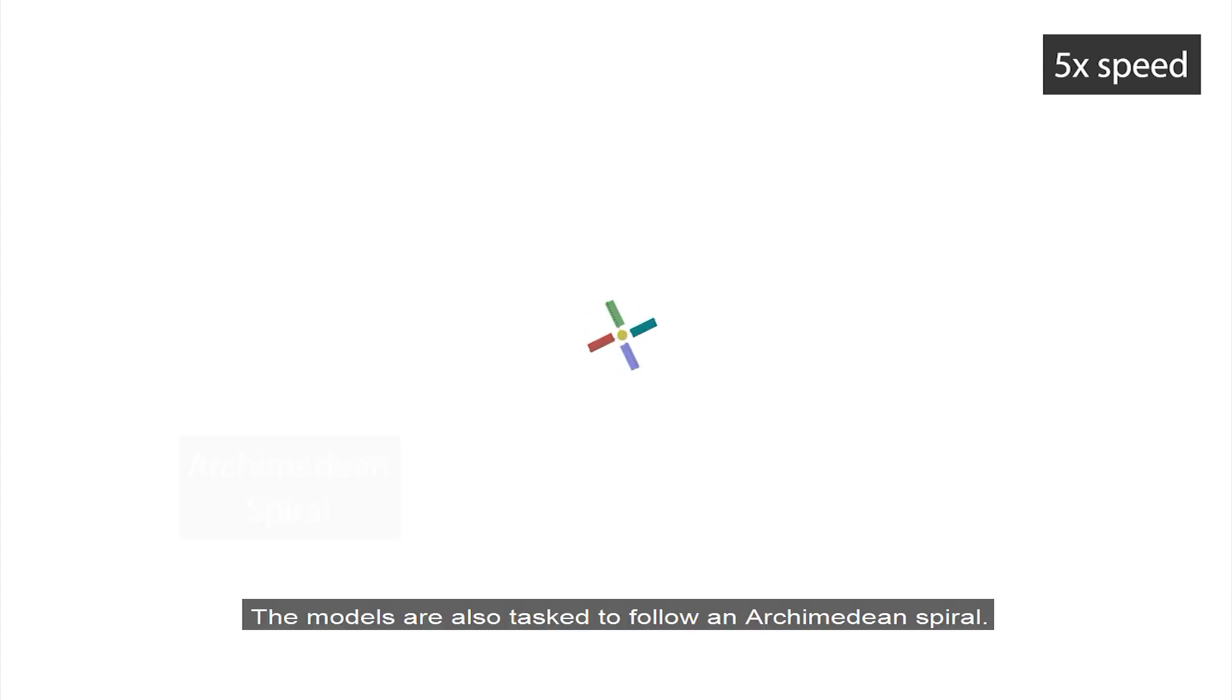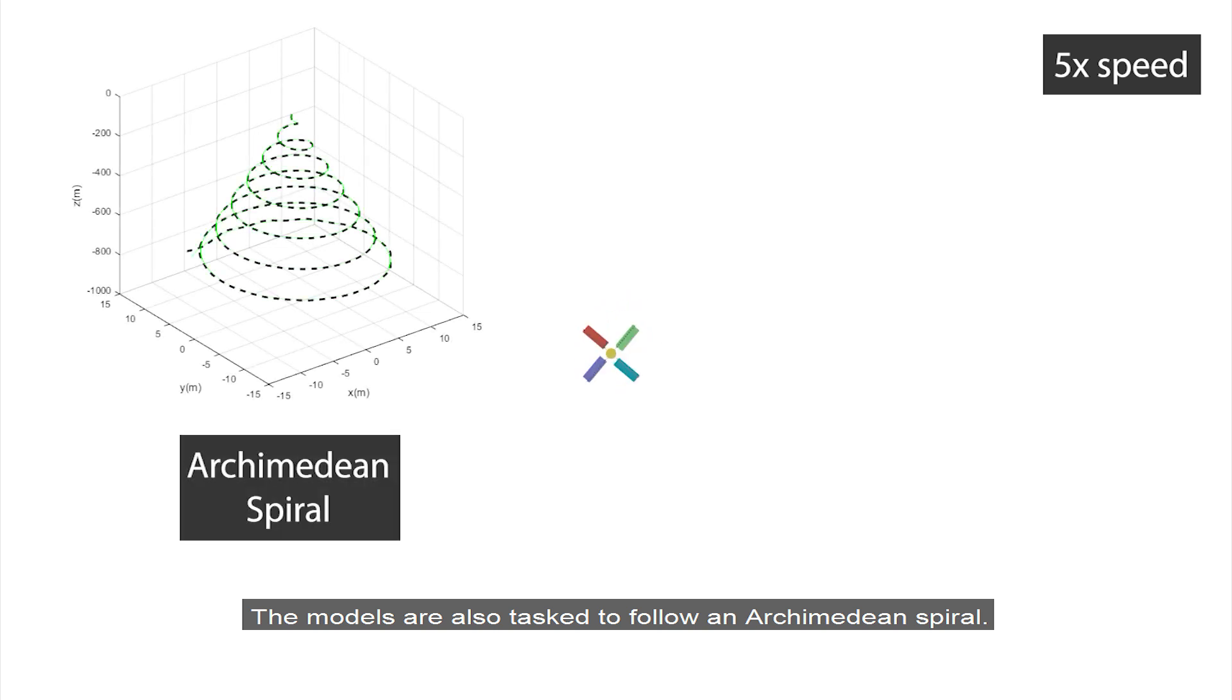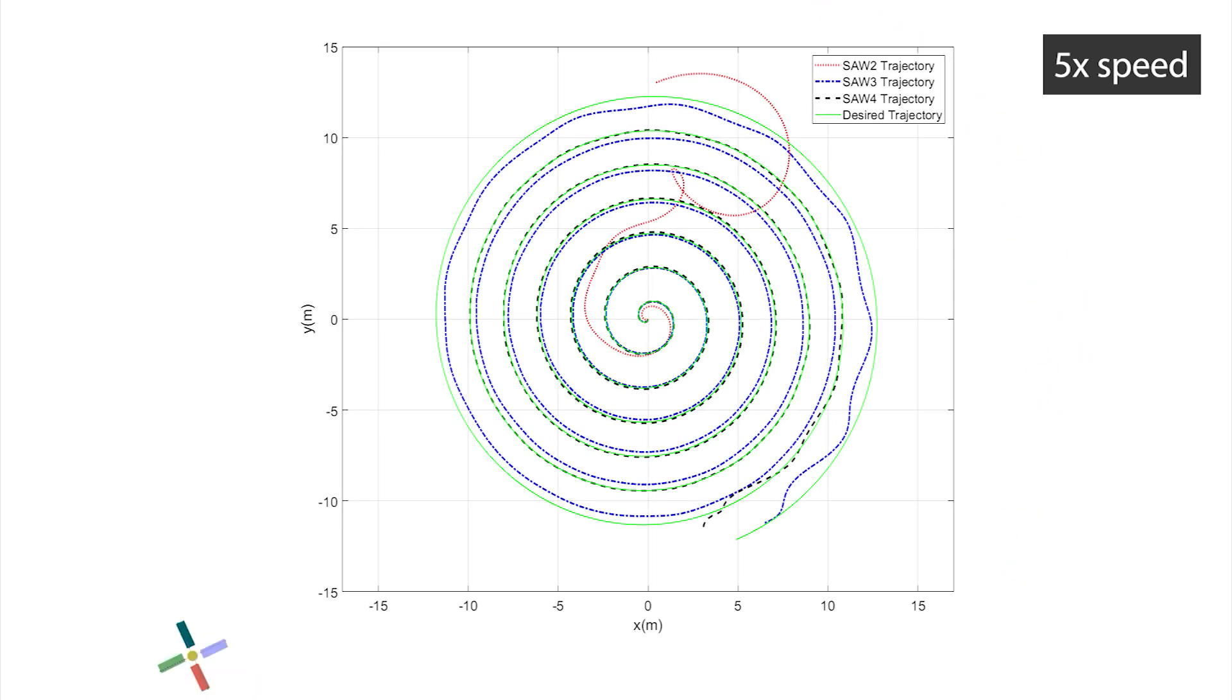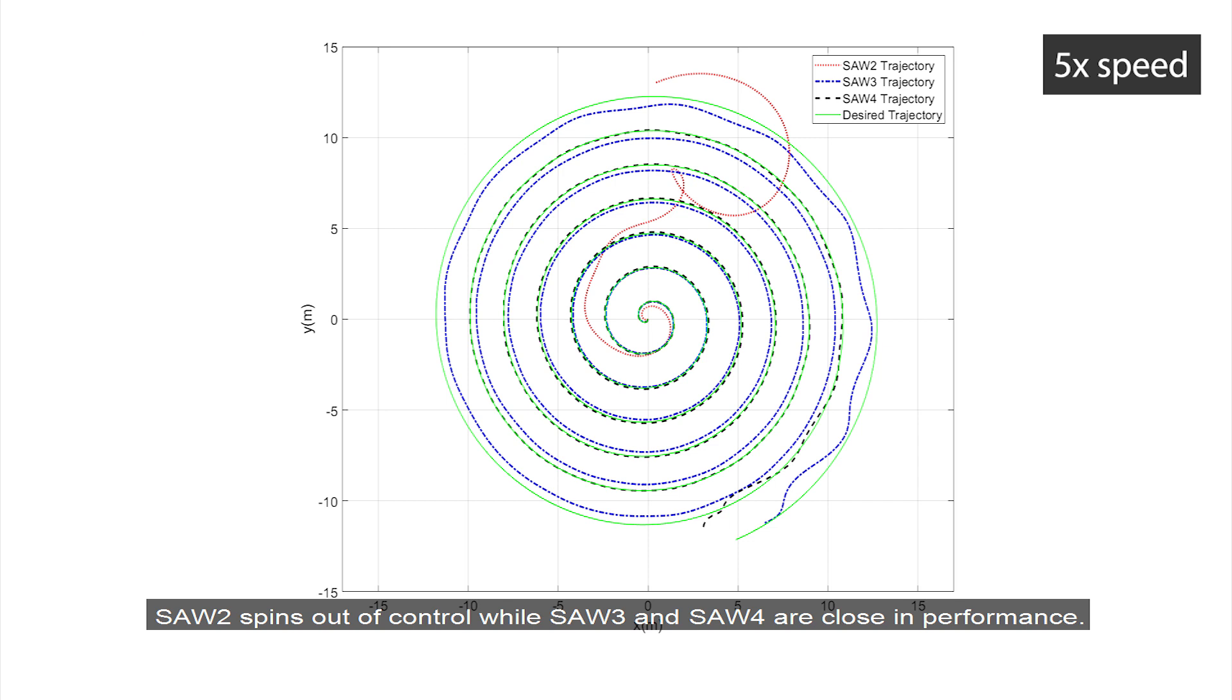The models are also tasked to follow an Archimedean spiral where the radius increases while the radial velocity remains constant. This tests for controllability and stability as lateral speed increases. SOAR 2 spins out of control while SOAR 3 and SOAR 4 are close in performance.